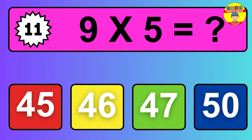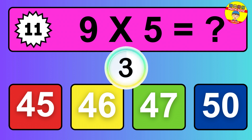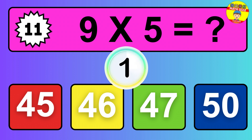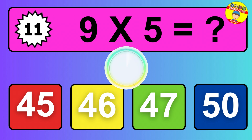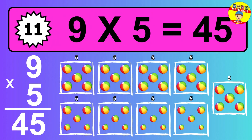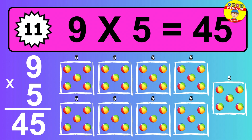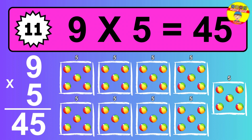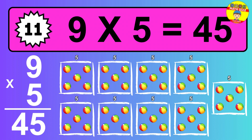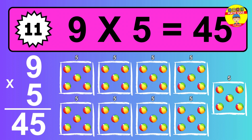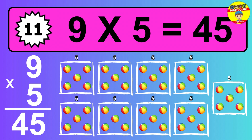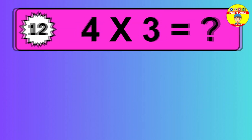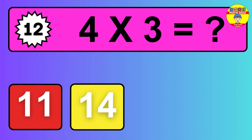Question 11. Nine times five equals what? So the answer is nine times five is forty-five. To calculate, we have nine groups with five balls each one. So how many balls do we have? Forty-five balls.